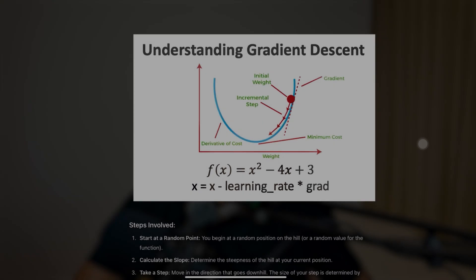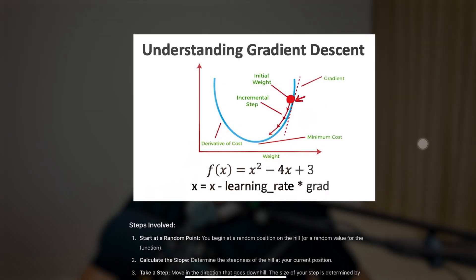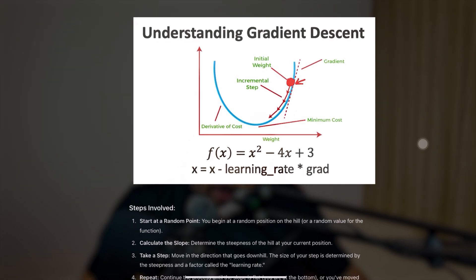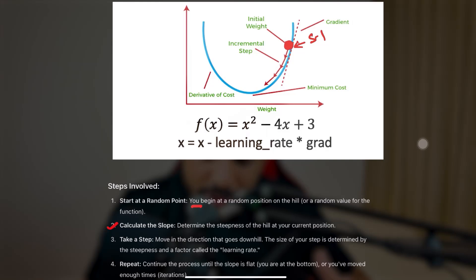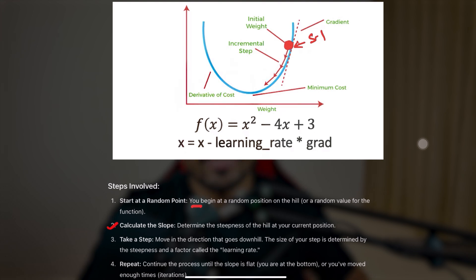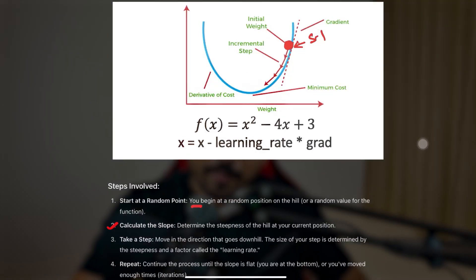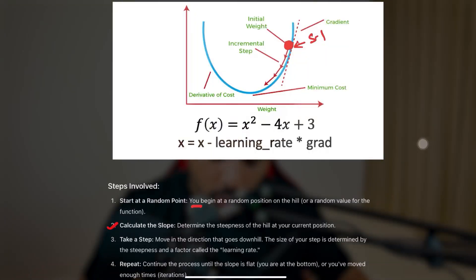Let's take another example. The first step is to start at a random point — it is not fixed that you start here only, you can start at any random point. You begin at a random position on the hill. The second step is to calculate the slope: determine the steepness of the hill at your current position. The blind person checks with his stick how much steepness is there. Then the third step is to take a step — move in the direction that goes downhill. The size of your step is determined by the steepness and a factor called the learning rate.